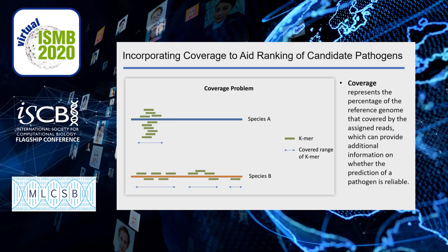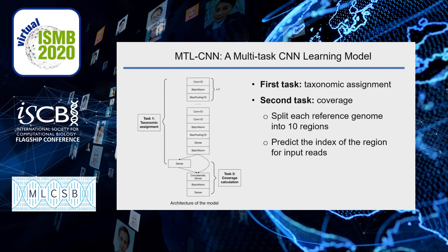Coverage represents the percentage of the reference genome that is covered by the aligned reads. This function can reflect the overall distribution patterns of aligned reads. For example, in this figure, 10 k-mers can be aligned to both species A and species B, but the coverage on species B is higher than species A, so these k-mers should be assigned to species B. Although the coverage function is very important, it has not been incorporated in many tools.